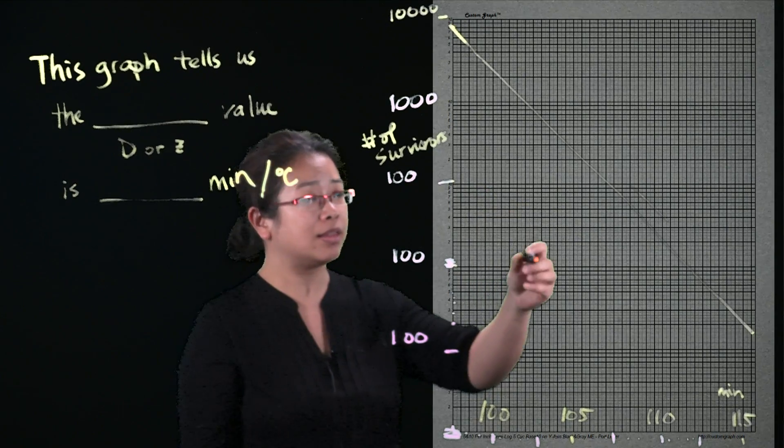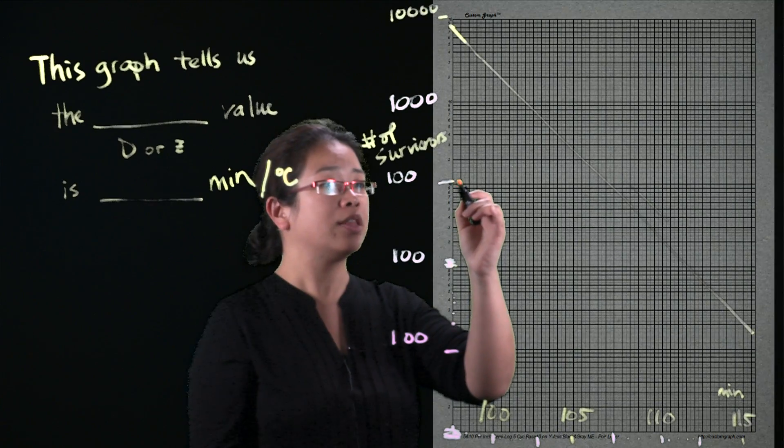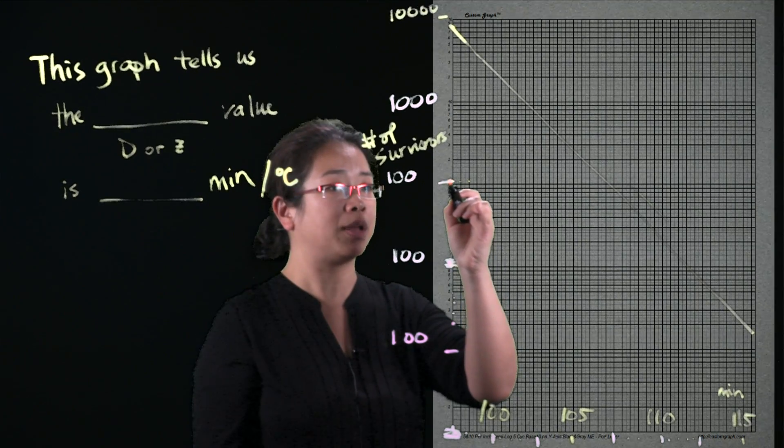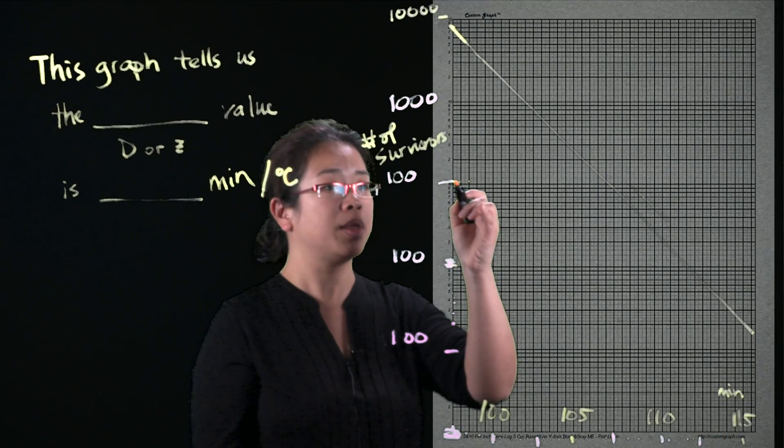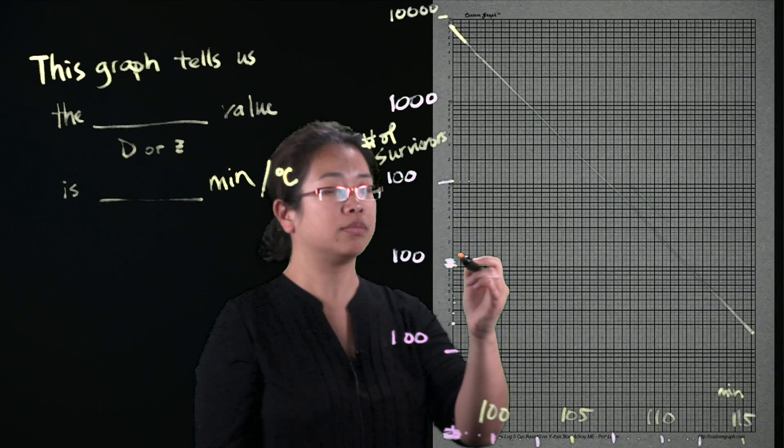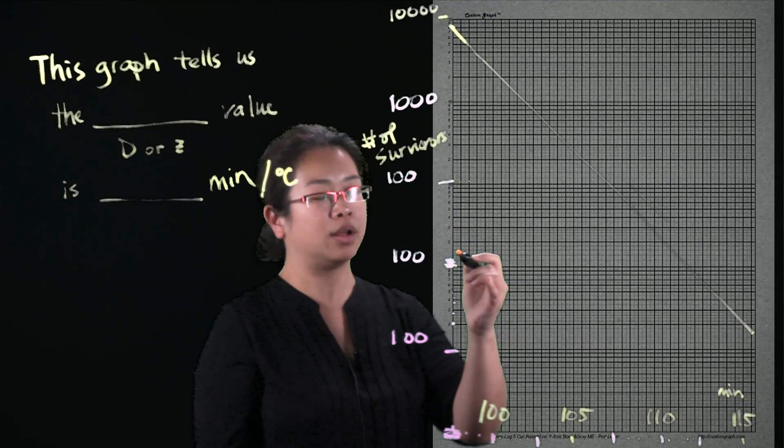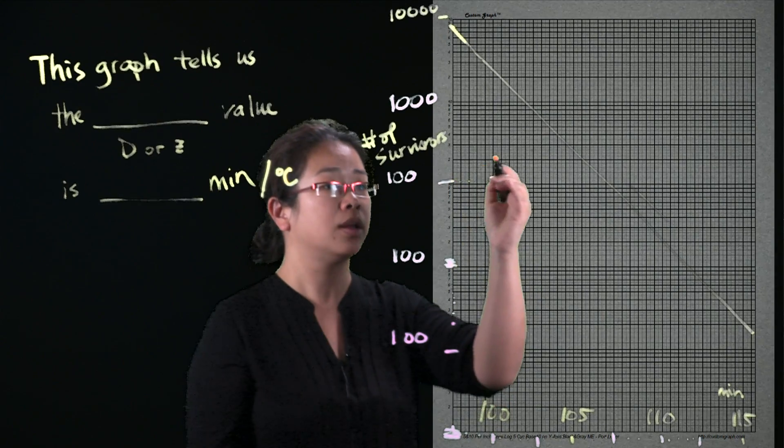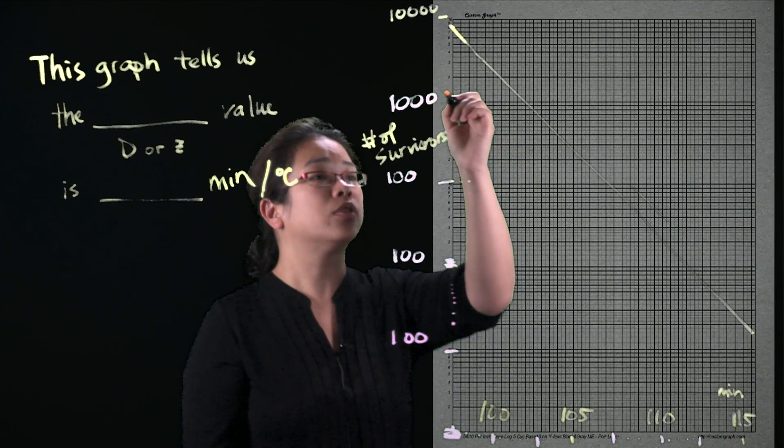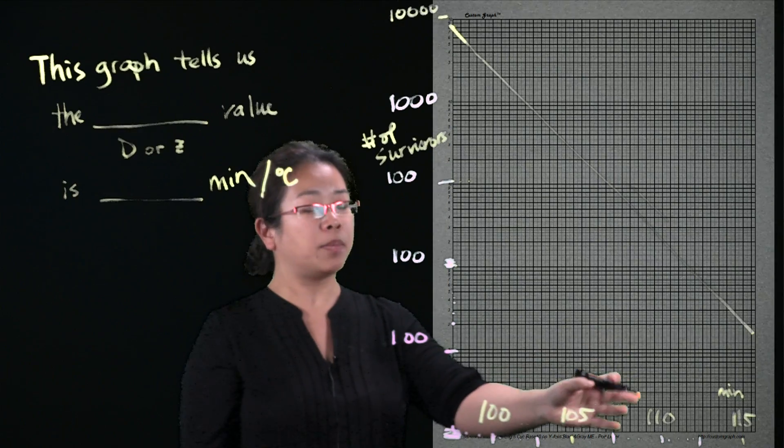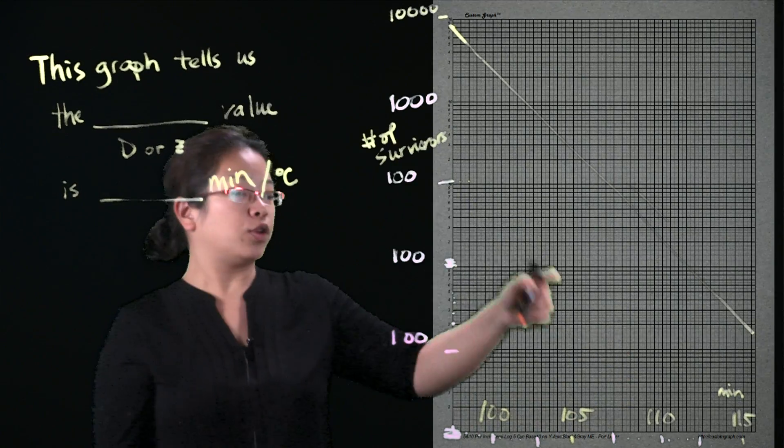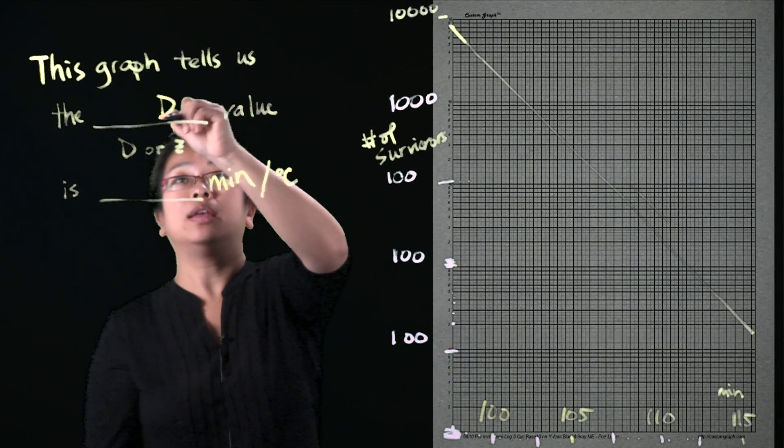So this is a process to tell us the time it takes to reduce our bacterial load by a matter of a log cycle, so by 90%. So this is number of survivors over time. So this is a D value.